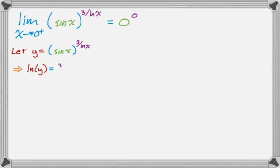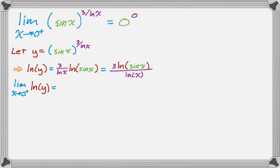So, again, we let y equal the thing that we start with. From there, we take the natural log of both sides to get this. And then I brought the exponent down at the same time. And now I'm going to rearrange a little bit that... So, I have that. So, 3 natural log of sine of x over the natural log of x.